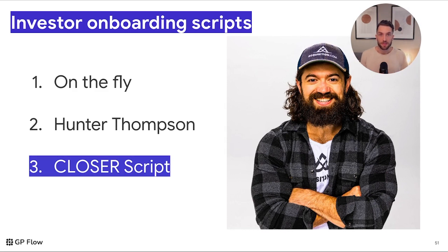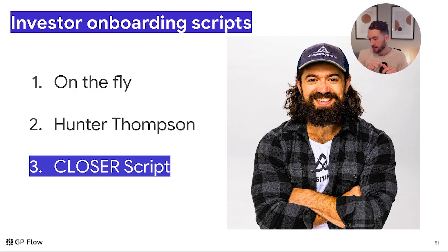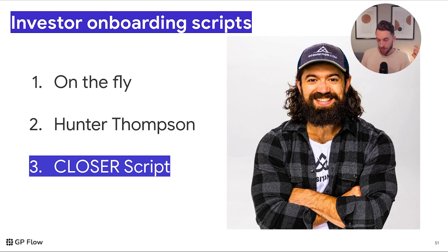The last script was the CLOSER script, which worked best with more transactional people looking for answers quickly who didn't have time to spare. The CLOSER script is by Alex Hormozi. C stands for Clarify where they are — understanding if they're looking for passive income, capital growth, 1031 exchange, etc. L is for Labeling — if they're looking for passive income, label that and have them agree. O is Overview of past problems and opportunities — what have you tried before? S is Sell — transitioning their opportunities into our offering. E is Explain away the obstacles. R is Reiterate — if they become a successful investor, reiterate their decision to take that path at each milestone.